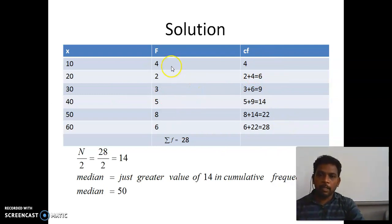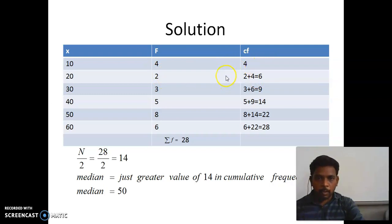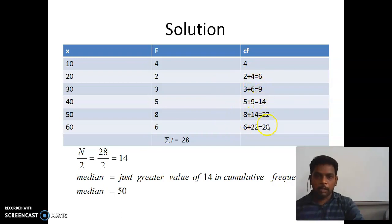The first two columns are the data and the last one is cumulative frequency. To find cumulative frequency: write the first frequency as it is, and for the second one add the second frequency and the first cumulative frequency. So 2 plus 4 is 6, then 3 plus 6 is 9, then 5 plus 9 is 14, and 8 plus 14 is 22, and 6 plus 22 is 28. We add in a cross way.